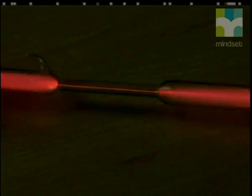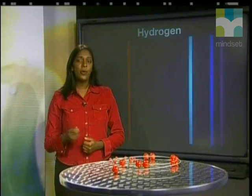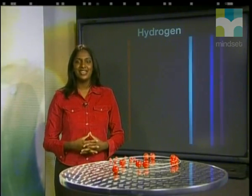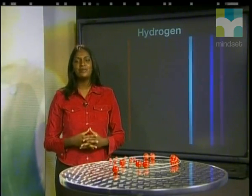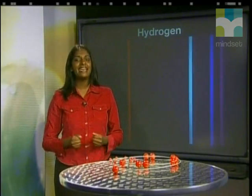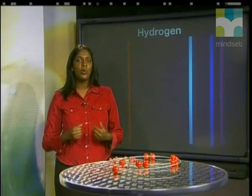This happens when an element is heated or electricity is applied to a discharge tube. When an electron gains energy, we say it has become excited — the electrons become excited by taking in or absorbing a quantum of energy.